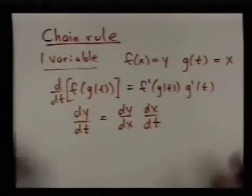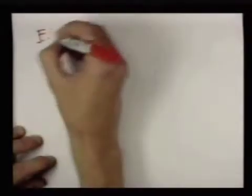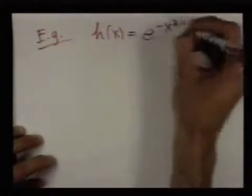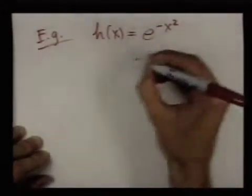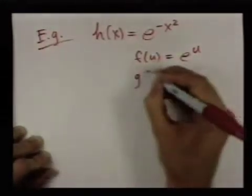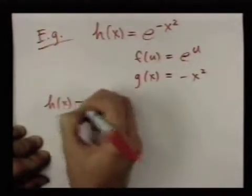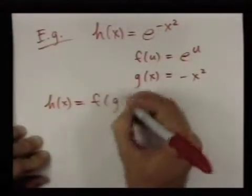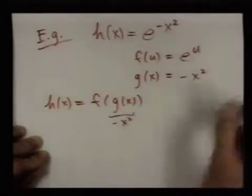Although this is just one-variable stuff, it's probably useful to go through applying this in a simple example. If I have the function h of x equals e to the negative x squared, this can be thought of as one function plugged into another. Namely, if I write f of u as the exponential function and g of x as negative x squared, then h can be written as f with g plugged in, because all you're doing is taking negative x squared and putting that in the exponent.